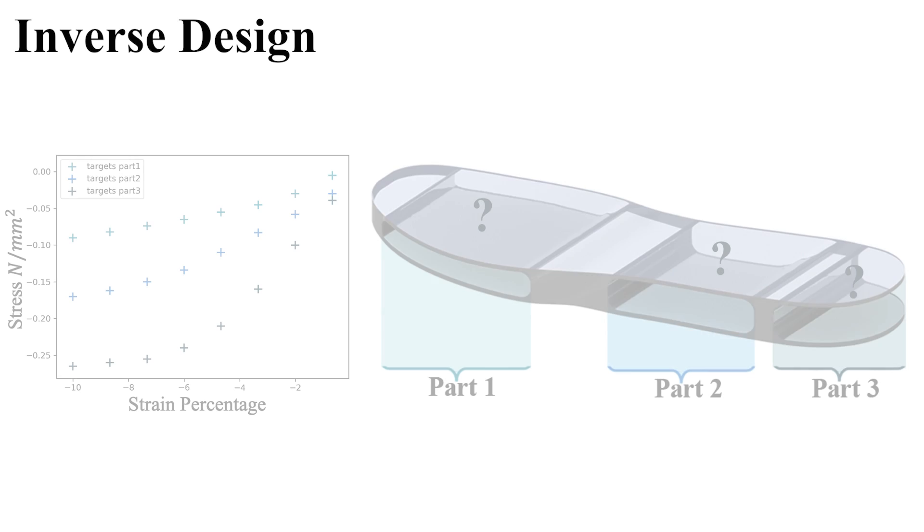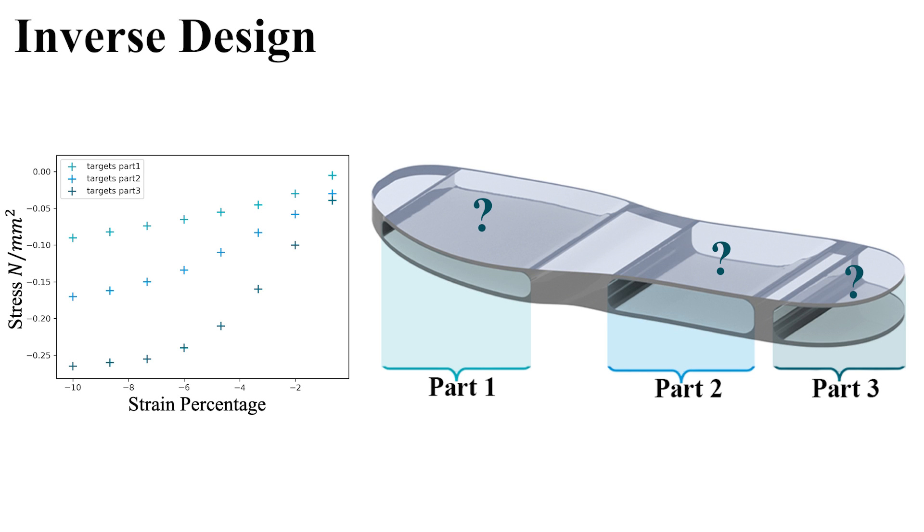However, finding structure parameters that lead to an ideal approximation of high-level performance goals is challenging. In this example, we aim to solve the inverse problem of finding structures that satisfy given strain-stress target profiles for different regions of a shoe cushion.